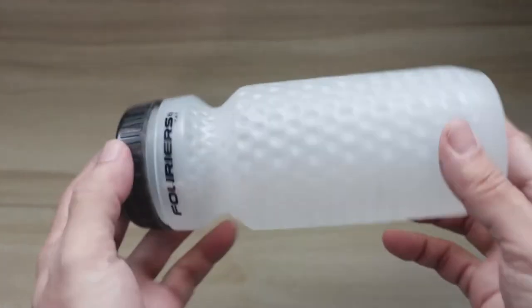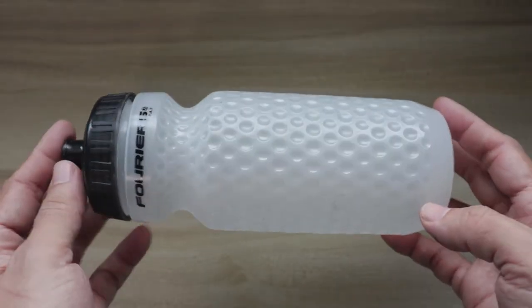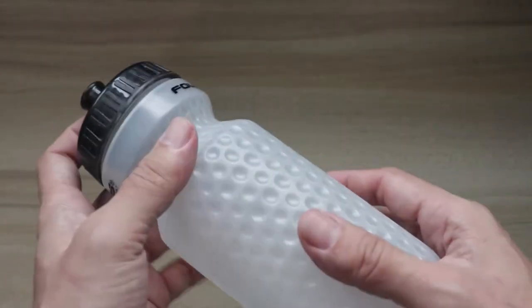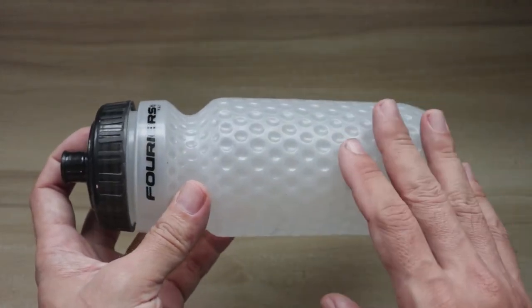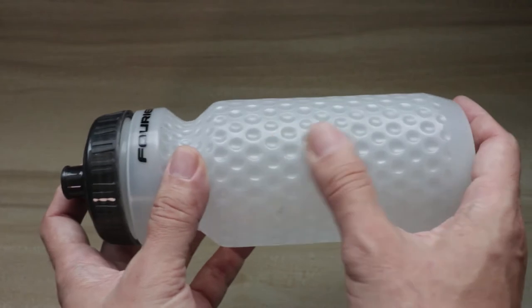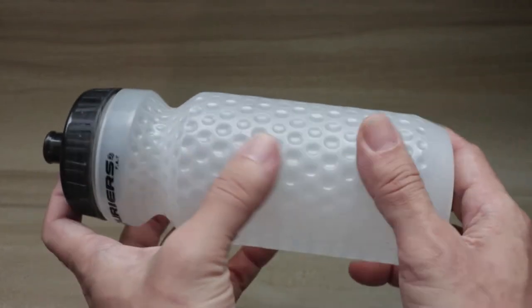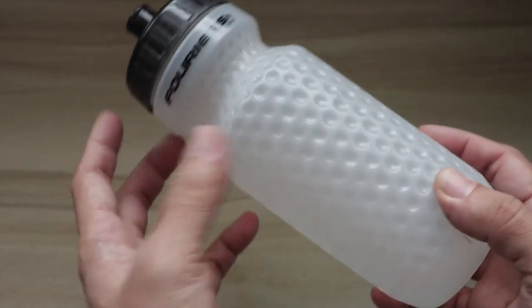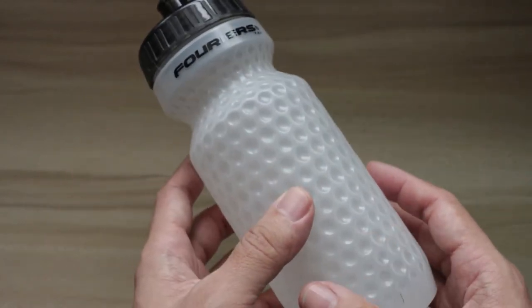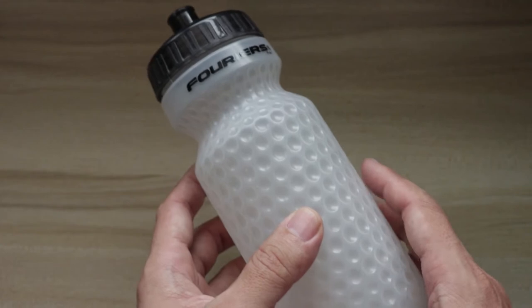Let's take a look at the bottle itself. At a glance, it does look like a conventional cycling water bottle. Fouriers actually markets this as an aerodynamic water bottle because of the dimples, the golf ball effect that it provides. But I'm guessing that the most gains you're gonna get out of this bottle is not so much on the aerodynamics but more on the weight.